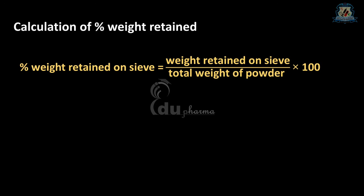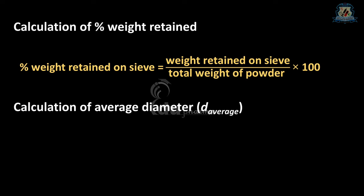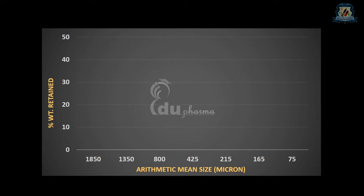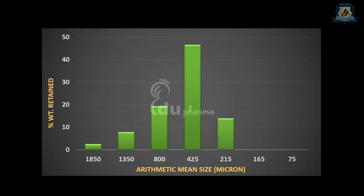Let's see the calculation part. Percentage weight retained on the sieve is calculated using this formula, while average diameter is calculated using the Admixture equation. The frequency distribution curve is plotted by taking the arithmetic mean size (small d) on the x-axis and percentage weight retained on the y-axis. Here you can see a typical bell-shaped normal distribution curve, which represents that our powder sample is polydispersed.